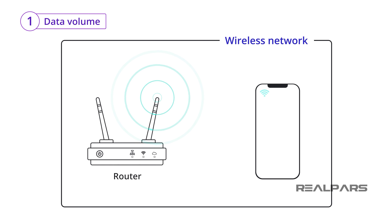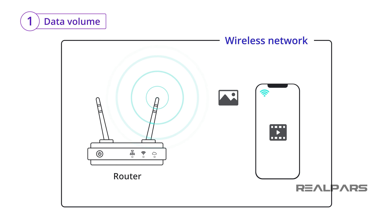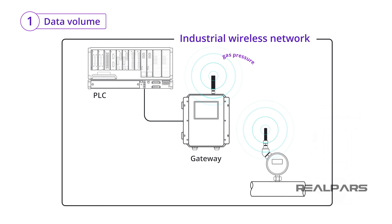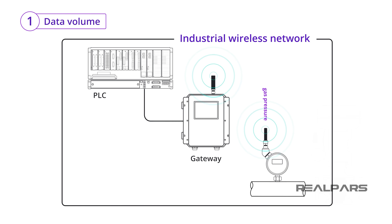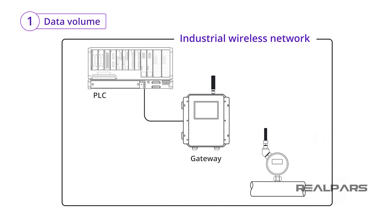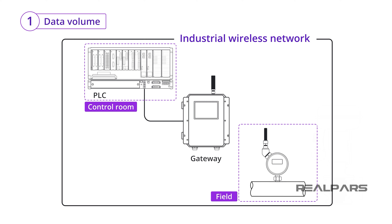A Wi-Fi network is designed for devices that send and receive large amounts of data — examples include videos on the internet, images, web pages, etc. These are what we consider large data packages. In contrast, an industrial wireless system is designed for devices that only need to send and receive a small amount of data. An example is the small amount of data that a gas pressure sensor in an industrial process needs to send to the controller.